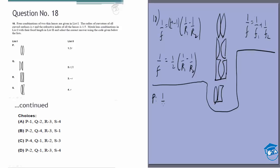For option P: 1/f = (1/2)(1/R1 − 1/R2). R1 is positive R and R2 is negative R, both of magnitude R. So 1/f = (1/2)(1/R − (−1/R)) = (1/2)(2/R) = 1/R, meaning f = R for each lens surface. Combining: 1/f_total = 1/R + 1/R = 2/R, so for P the answer is R/2.